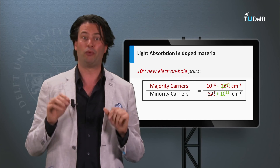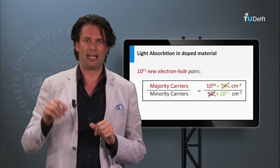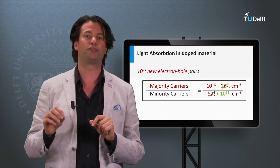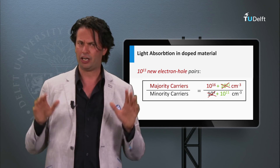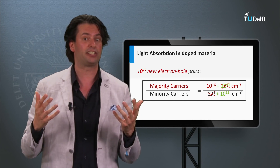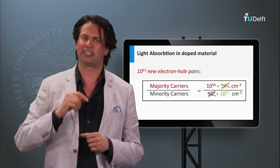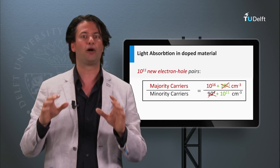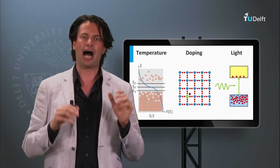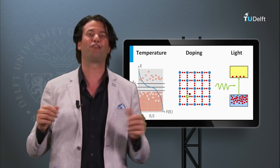This is an important conclusion which we will need later to understand the working principle of solar cells. In doped semiconductor materials, light absorption has only an effect on the density of the minority charge carriers. In summary, in this block we have discussed how to excite charge carriers in a semiconductor material by temperature, doping, and light absorption. The next question is how those charge carriers move around and what makes them move in a semiconductor material — we will discuss transport of charge carriers in the next block.